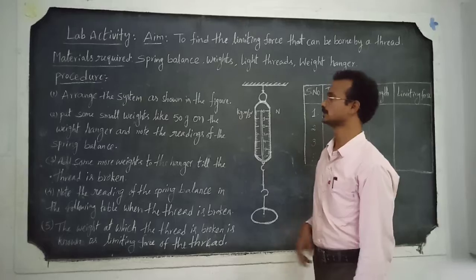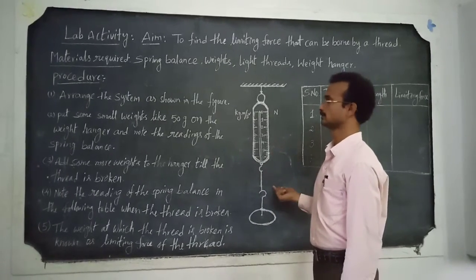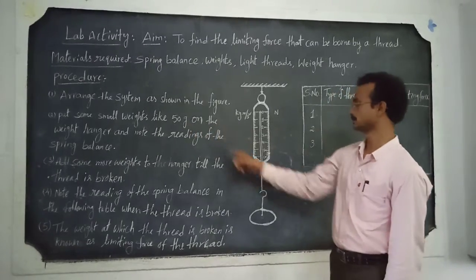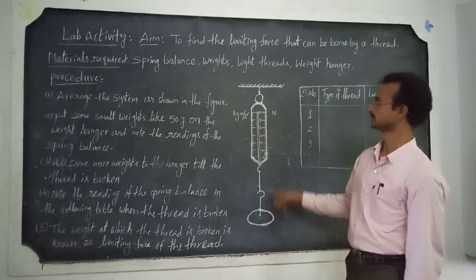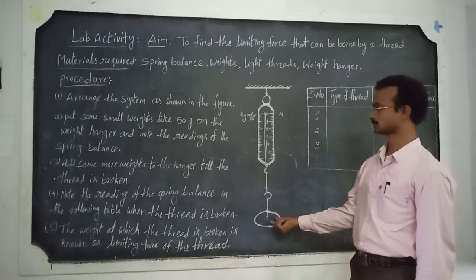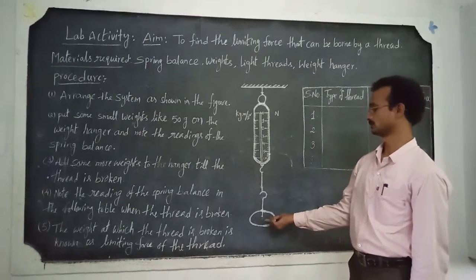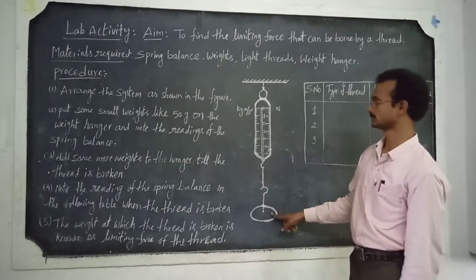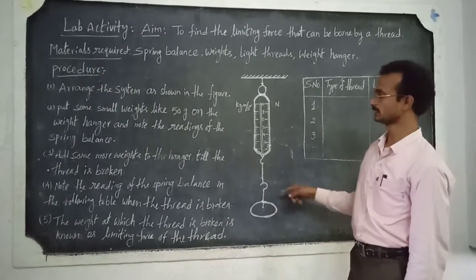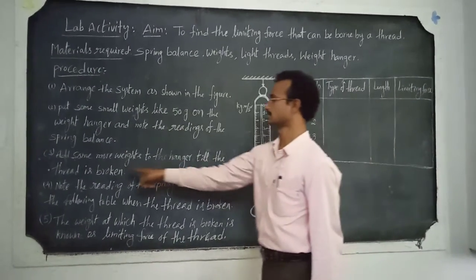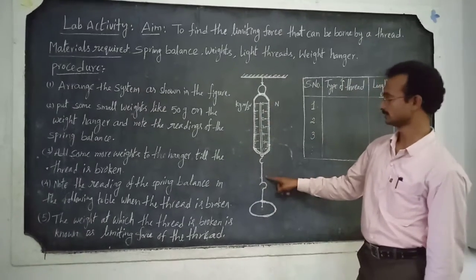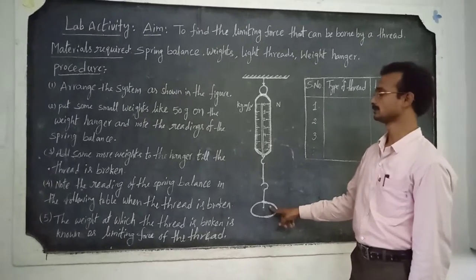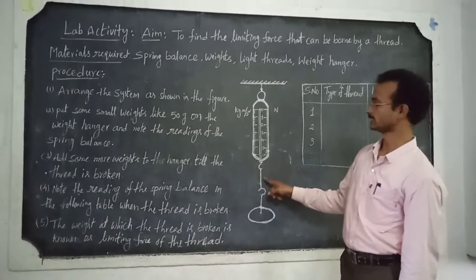The procedure of this lab activity is to arrange the system as shown in the figure. Then put some small weights like 50 grams on the weight hanger, then 100 grams, and so on. Keep adding weights till the thread is broken. Note down for which weight the thread has broken.